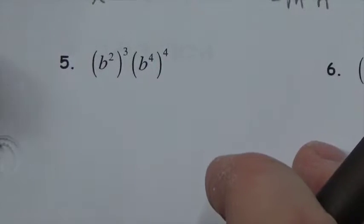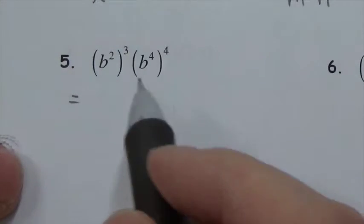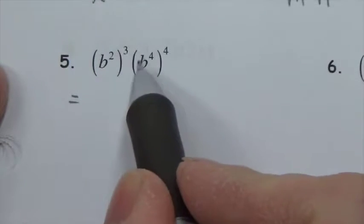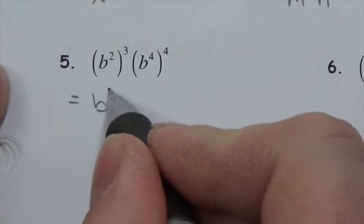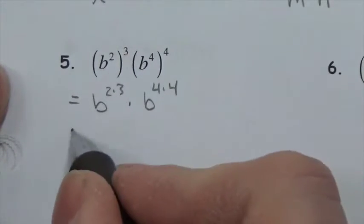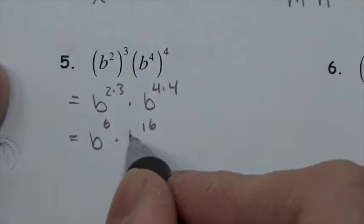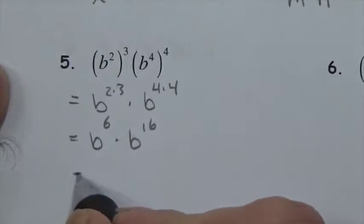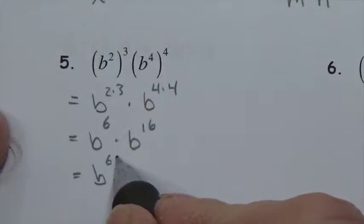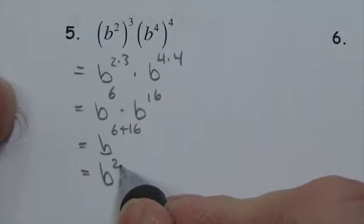For (b squared) cubed times (b to the fourth) to the fourth: order of operations — deal with the brackets and exponents first. b to the 2 times 3 times b to the 4 times 4 gives b to the sixth multiplied by b to the sixteenth. Now multiply — same base, add exponents — giving b to the twenty-second.